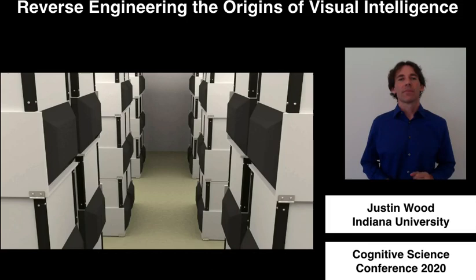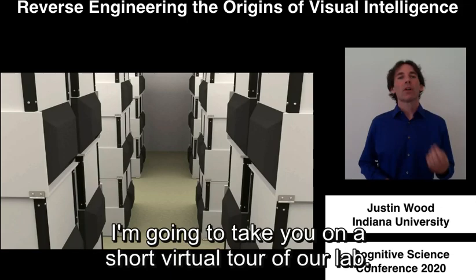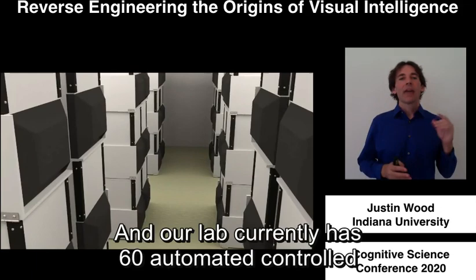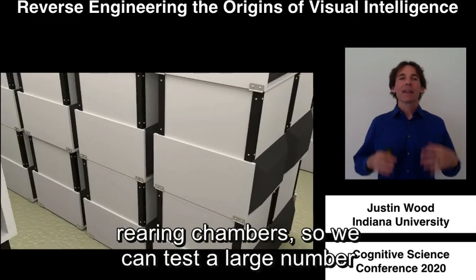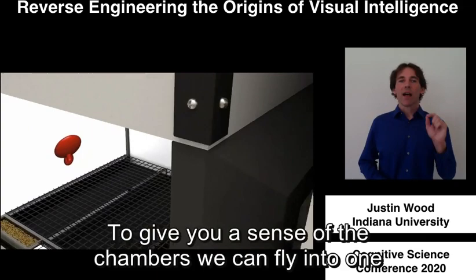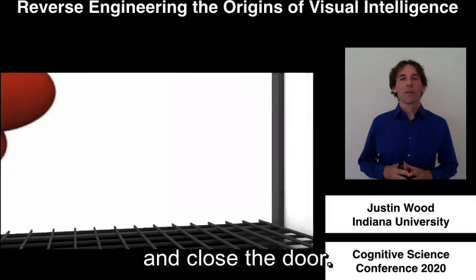To show you our controlled rearing setup, I'm going to take you on a short virtual tour of our lab. Each of these boxes is a controlled rearing chamber, and our lab currently has 60 automated controlled rearing chambers, so we can test a large number of subjects at once. To give you a sense of the chambers, we can fly into one of the chambers, rotate around and close the door, and then move around the chamber.